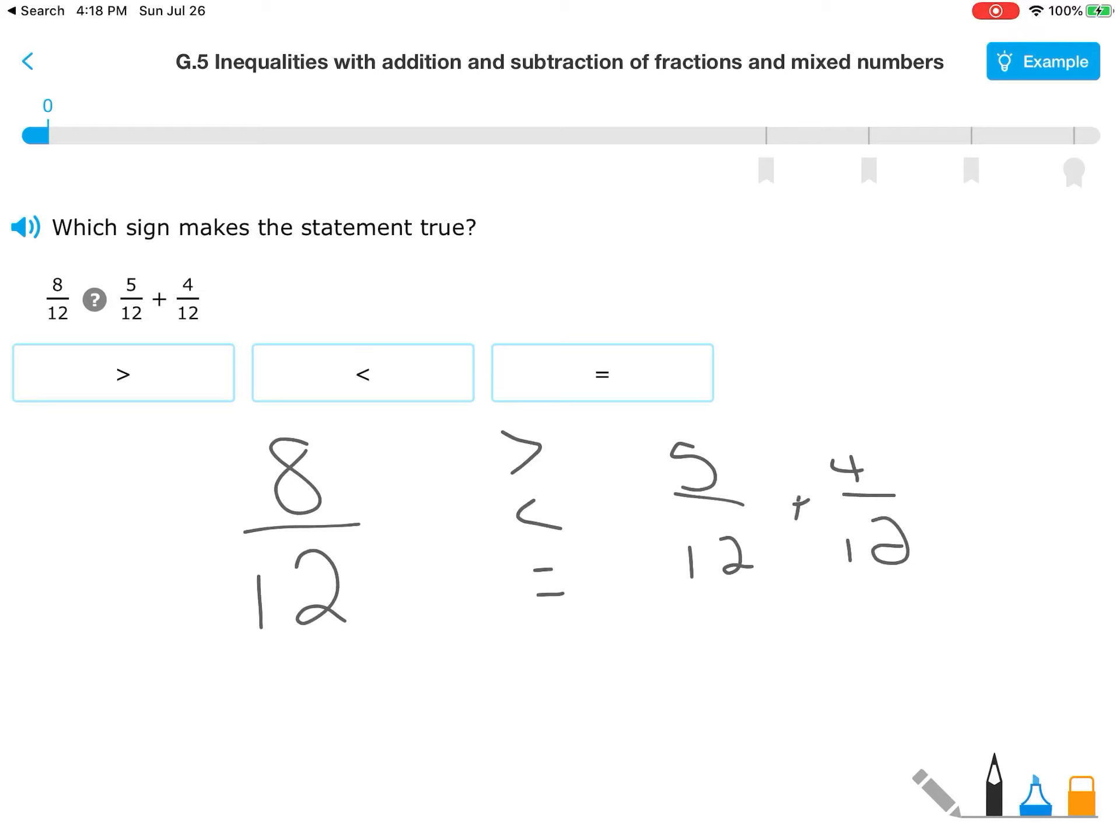Hopefully you remember that when we add fractions, we never add the denominator. We just add the numerators as long as the denominators are the same, which they are. So this is simply 9 twelfths, making this easier to solve. It would be less than. So that one's pretty simple.